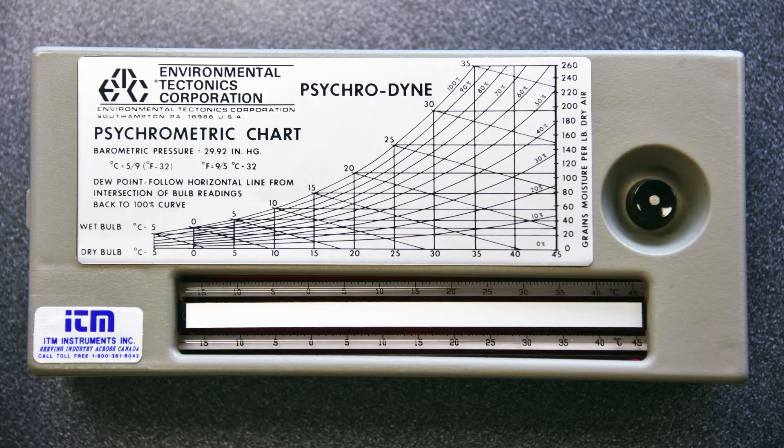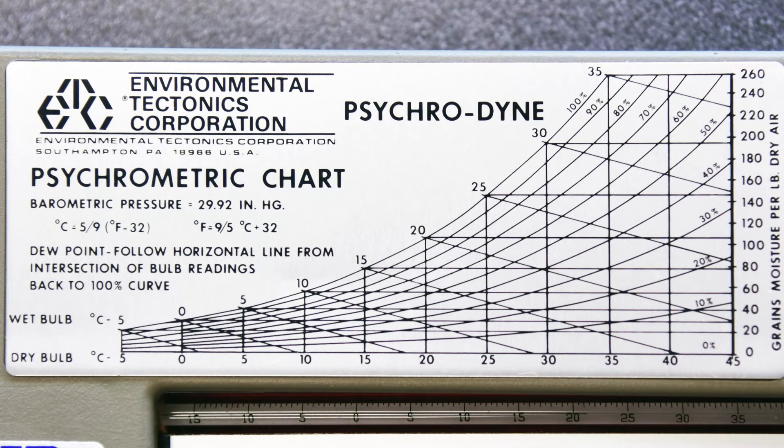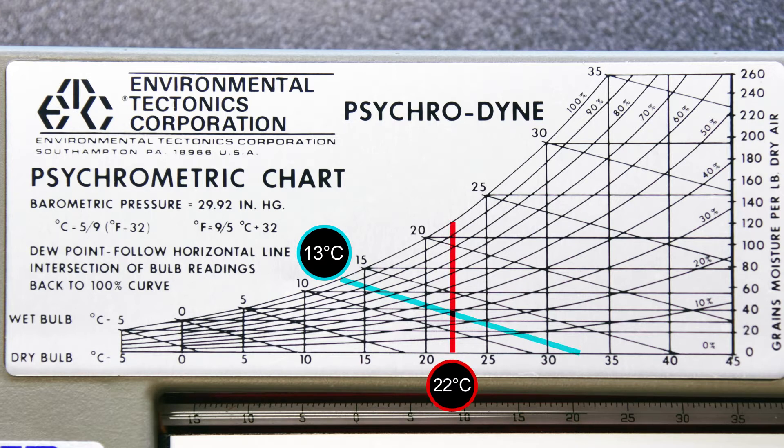For an approximate relative humidity reading of the space, you can use a psychrometric chart. There is one on the front of the psychrometer. Follow the diagonal line for the wet bulb temperature and the vertical line for the dry bulb temperature to find the point where they intersect. The value of the curved line at this point is the relative humidity.